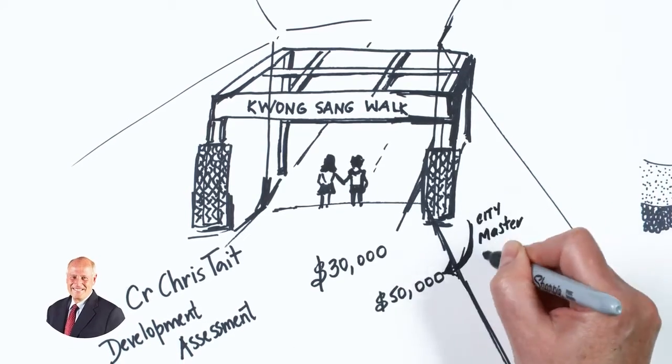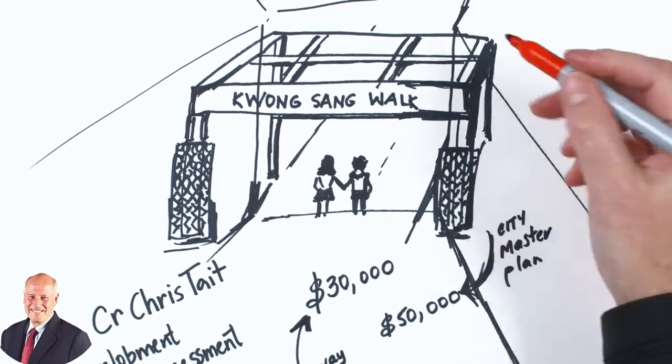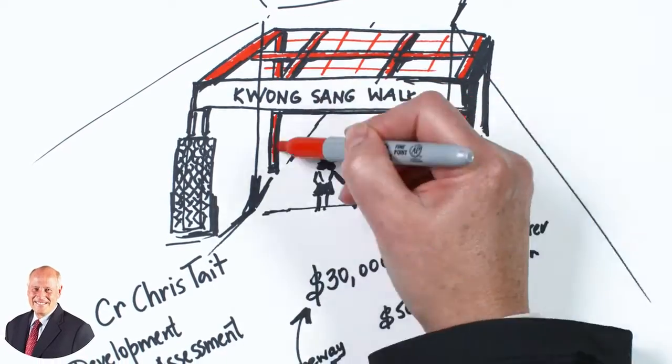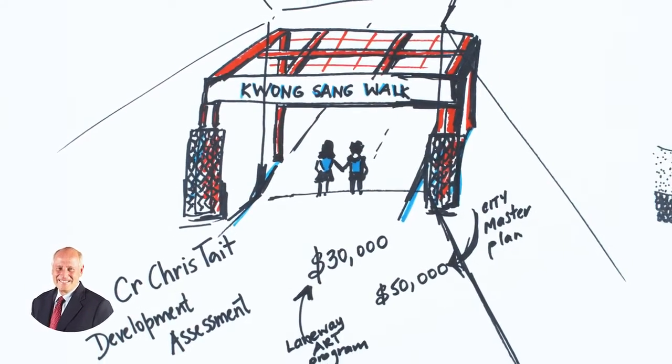The 2012 Planning Scheme is currently being reviewed and a number of amendments will occur this year relating to matters such as urban design, density and neighbourhood character.